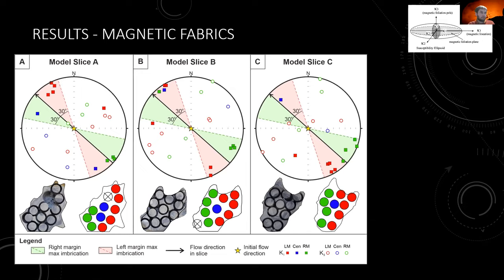The red area represents the maximum imbrication zone for the left margin, and green represents the right-hand margin. Flow is coming out of the page in these images. Samples collected from the left margin are imbricated in the correct way for inferring flow direction, and this is consistent across all slices with only a slight dip.